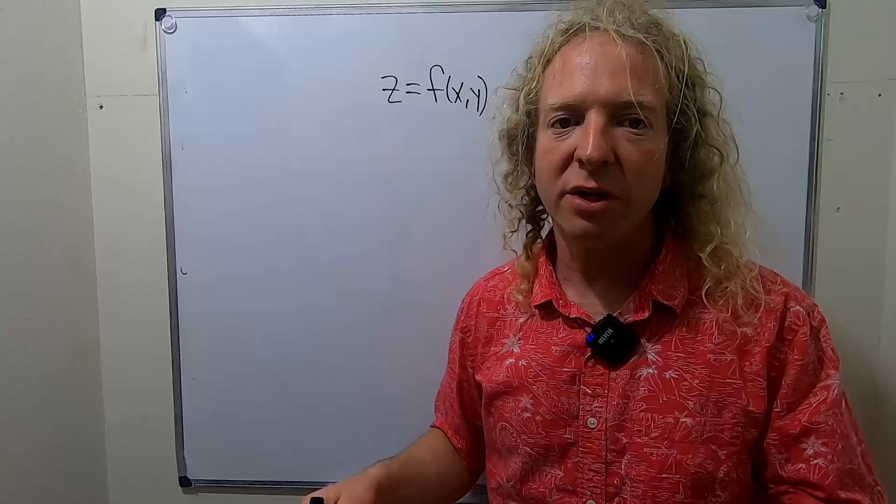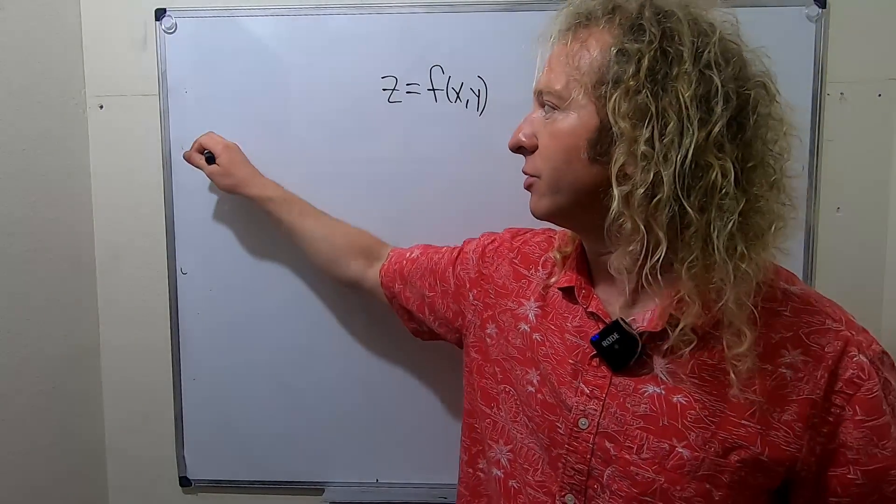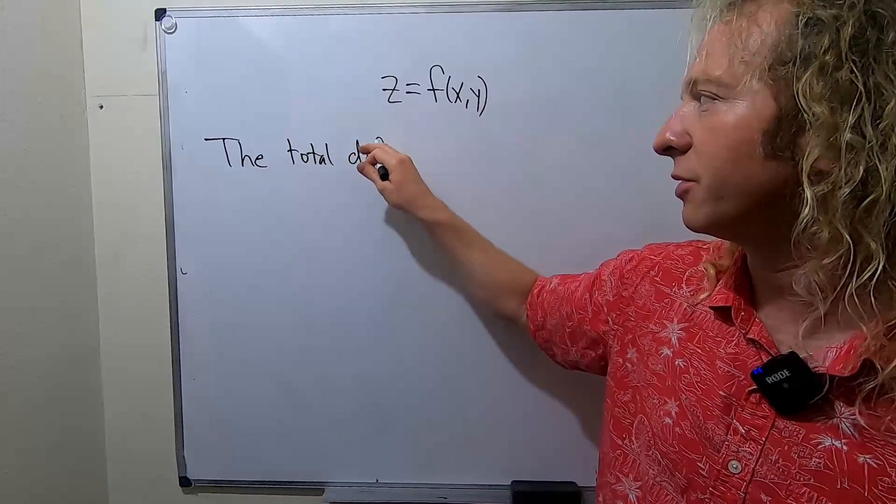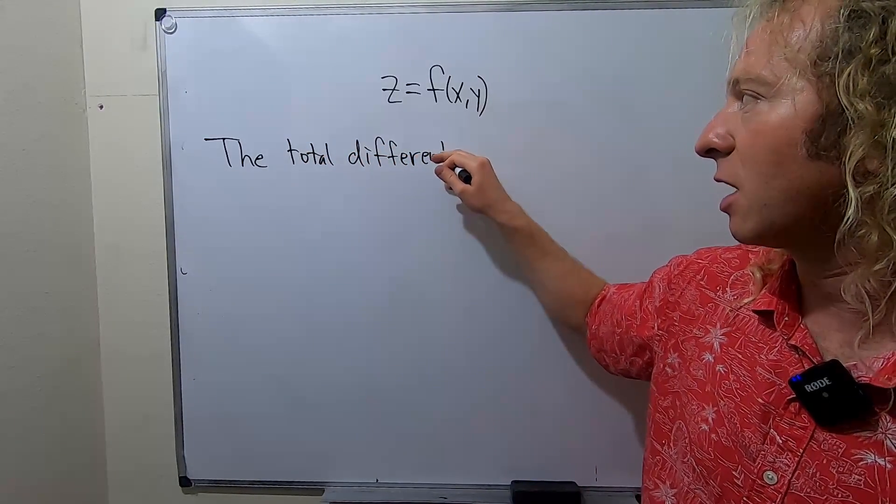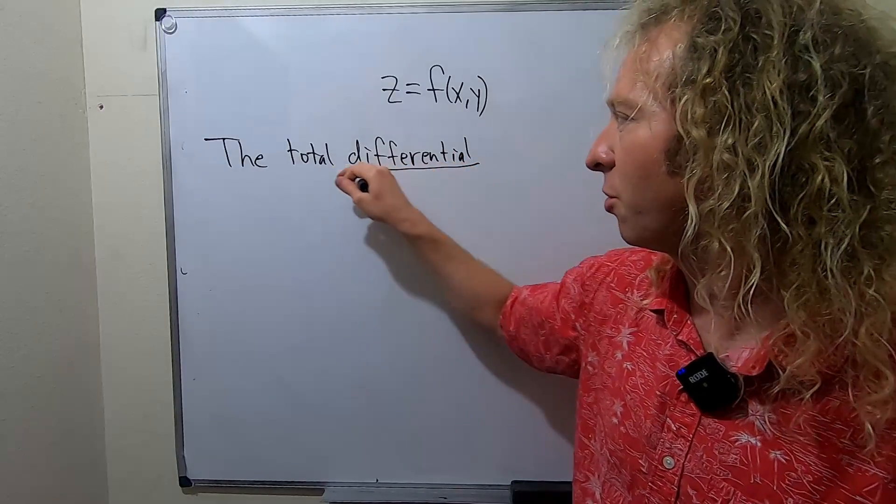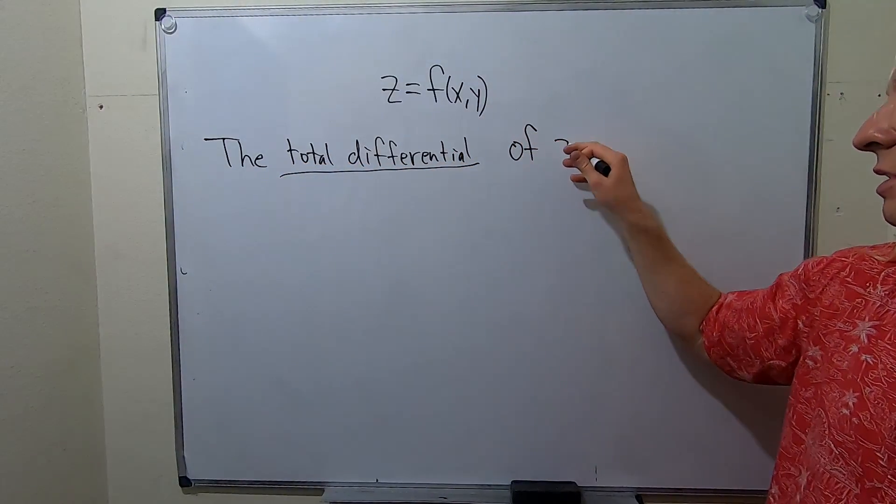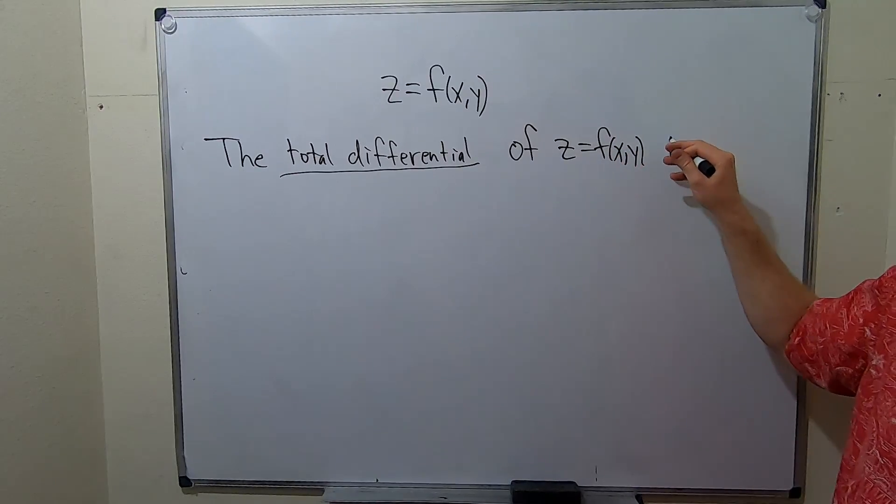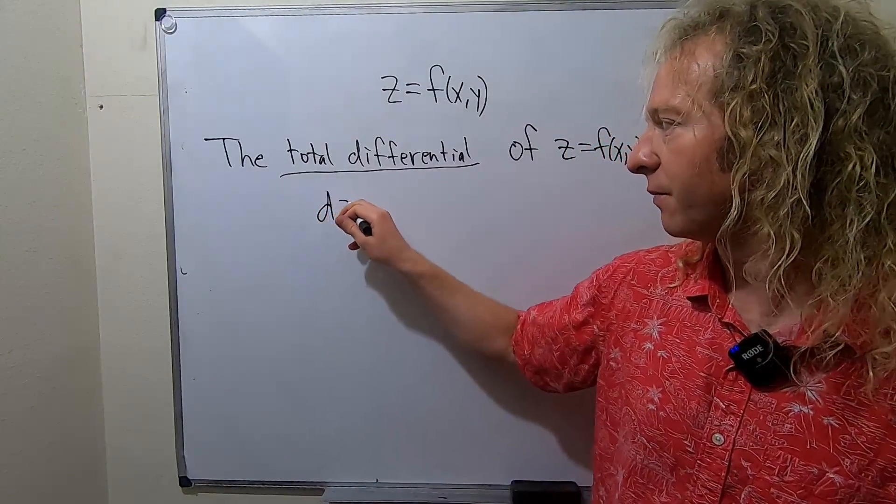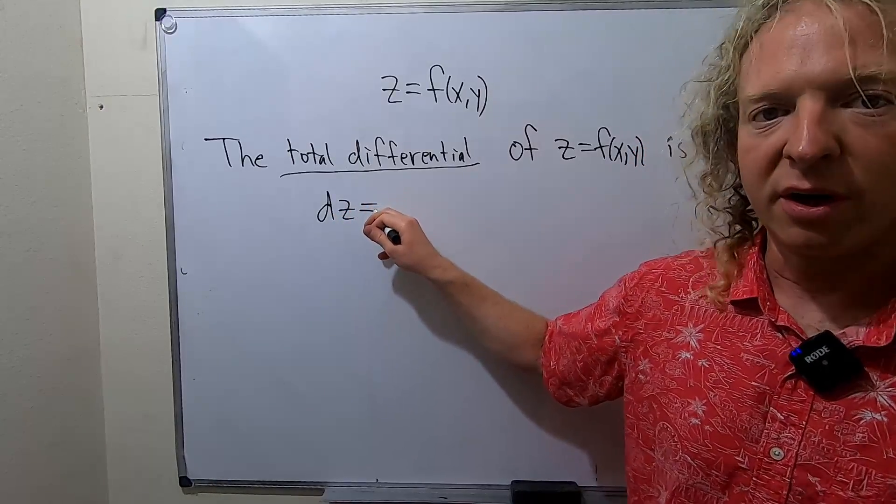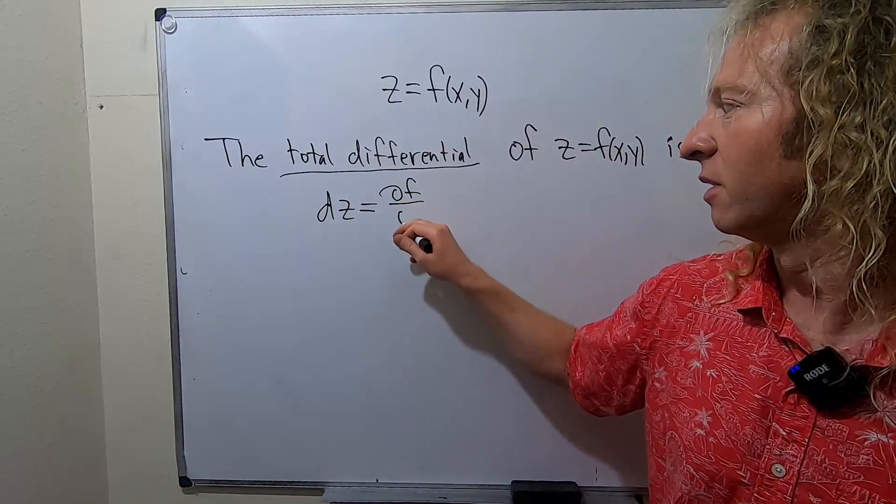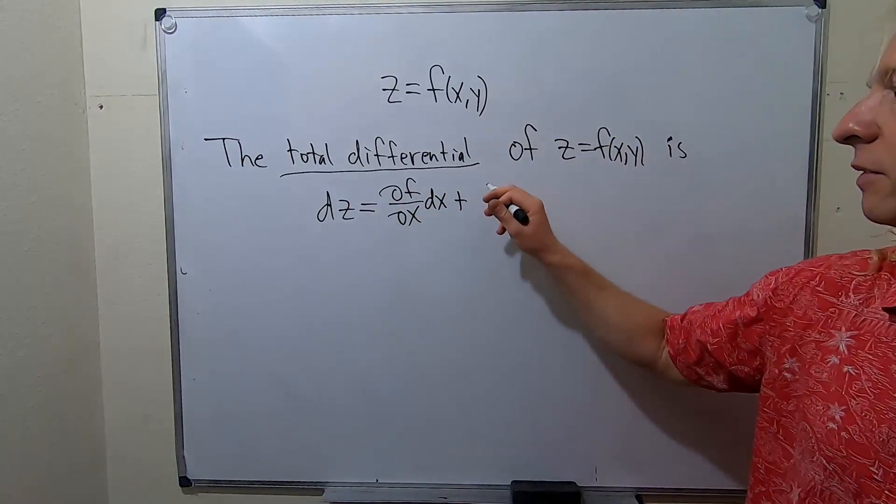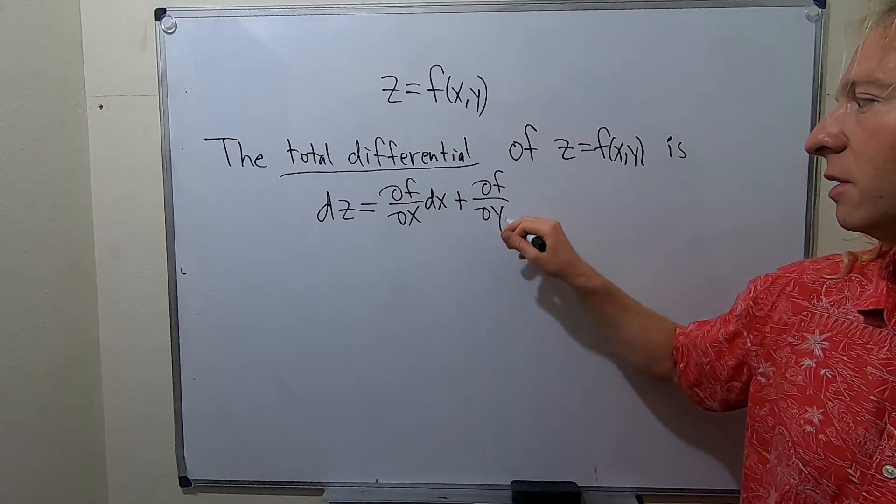What we can do is define something called the total differential. Some people call it the total derivative as well, but I believe this is the most common name. The total differential of z equals f of x, y is - and it's a really easy formula to memorize - dz equals del f del x dx plus del f del y dy.